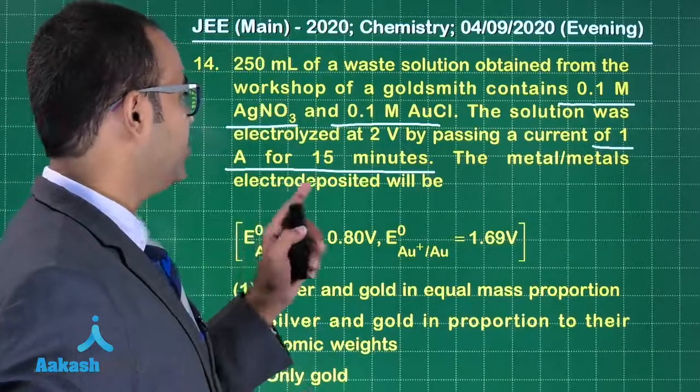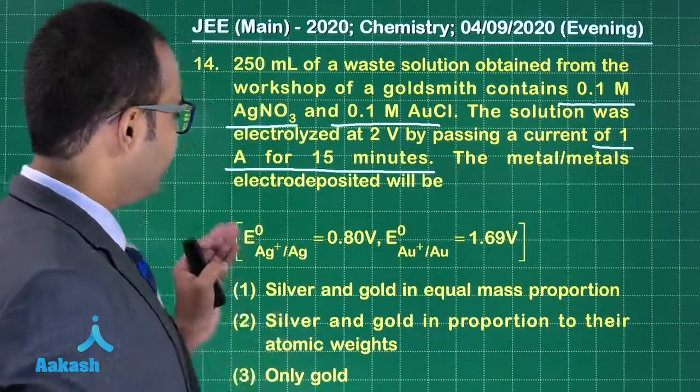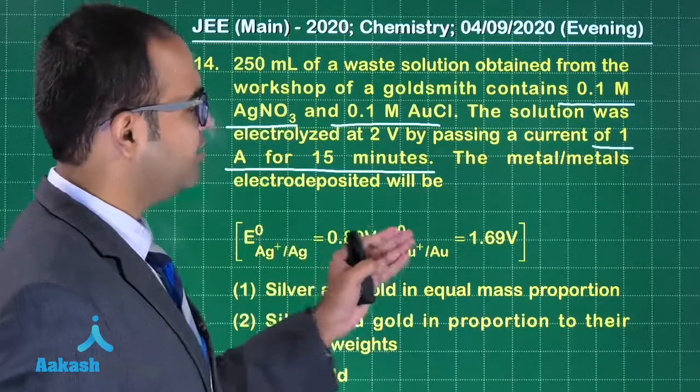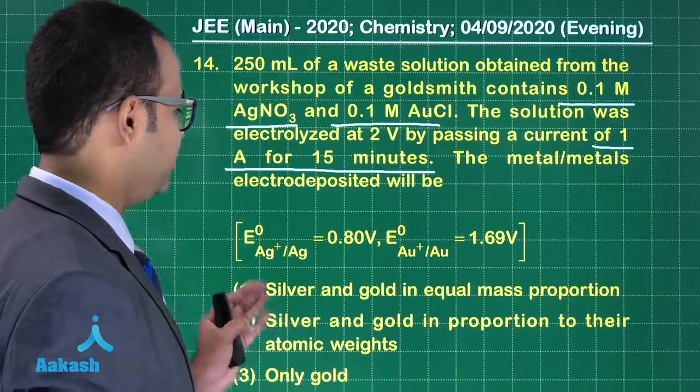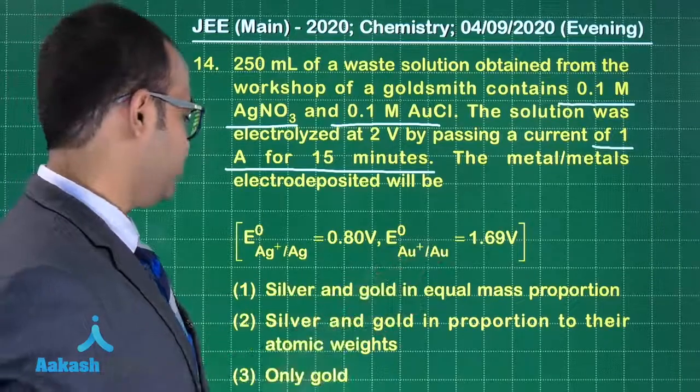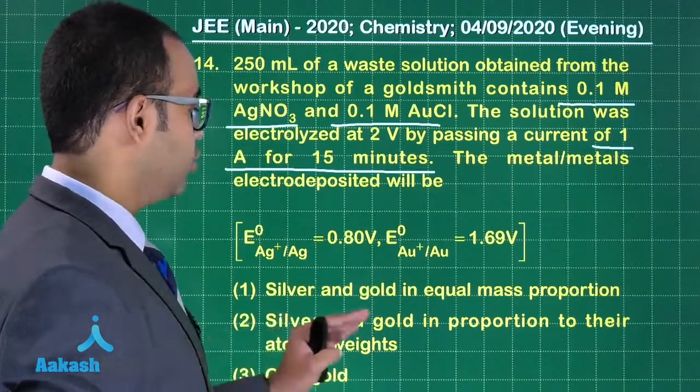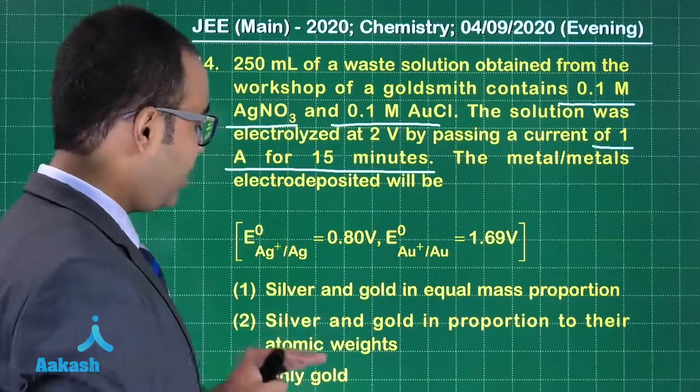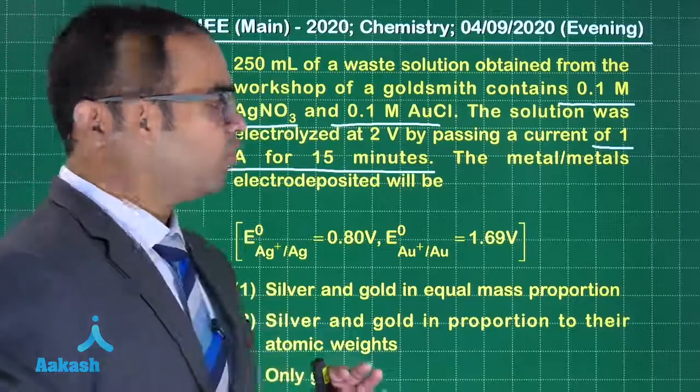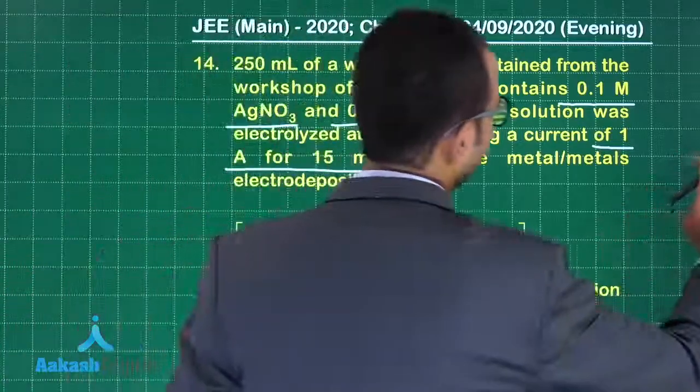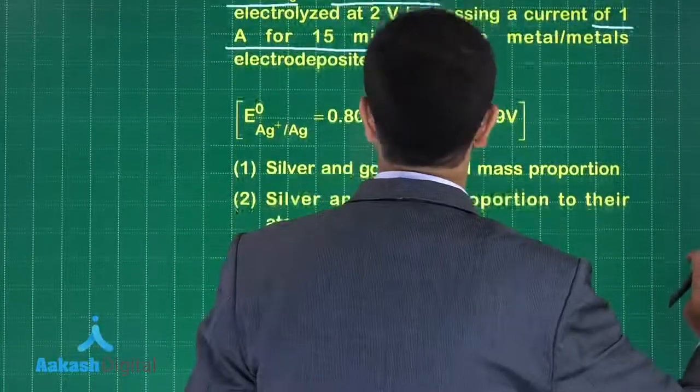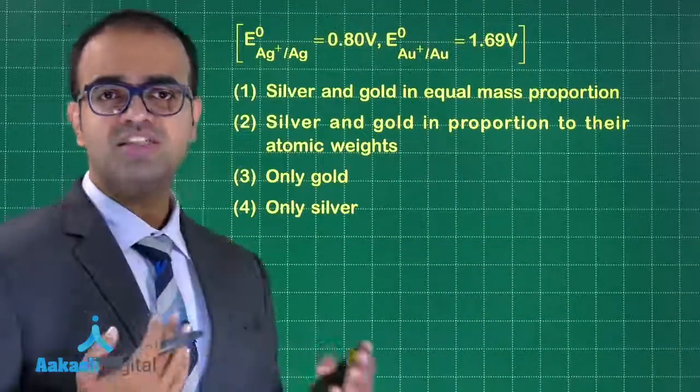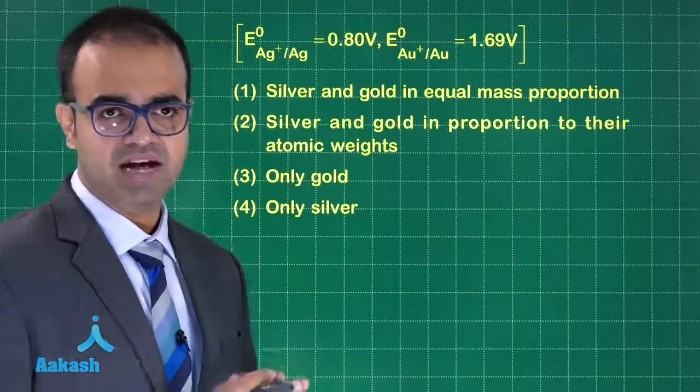The metals electrode deposited will be. They have given E0 of Ag+ is 0.8 and E0 of Au+ is 1.69. What are the options? Silver and gold in equal mass proportions, silver and gold in proportion to their atomic weights, only gold, only silver. What we have to do is first see the amount of charge that we are passing and find out the moles of electrons that are passed.